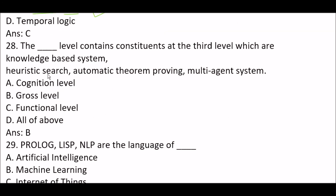Next question: the blank space label contains constituents at the third label, which are knowledge-based systems, heuristic search, automatic theorem proving, and multi-agent systems. Option A: cognitive label. Option B: gross label. Option C: functional label. Option D: all of the above. The right answer is Option B — gross label.